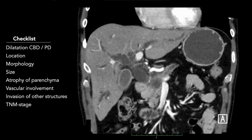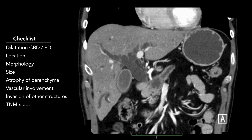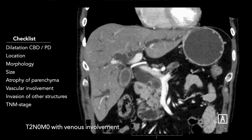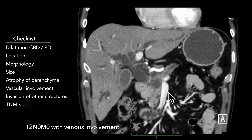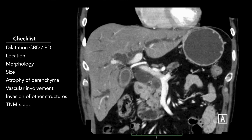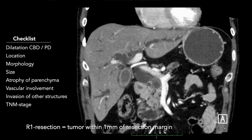In conclusion, we have a 27 millimeter mass in the head of the pancreas obstructing both the bile ducts and main pancreatic duct, with a slightly atypical morphology showing both cystic and solid components. There is a 90 to 180 degree relation to the superior mesenteric vein and less than 90 degrees to the portal vein. Depending on resectability criteria, this would be borderline or resectable. In our institution, this lesion was resected, confirming a T-2 lesion with less than one millimeter margin to the SMV — an R-1 resection.